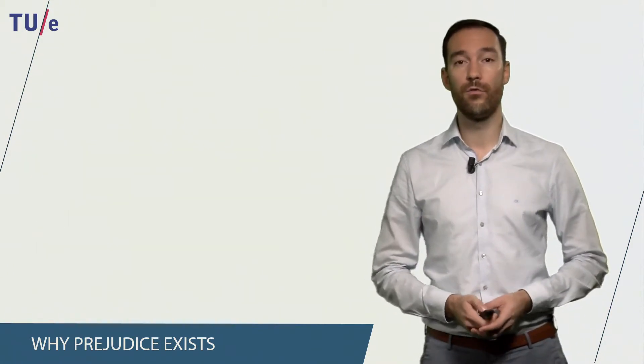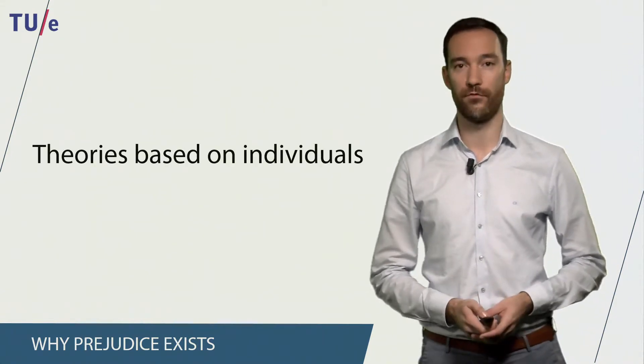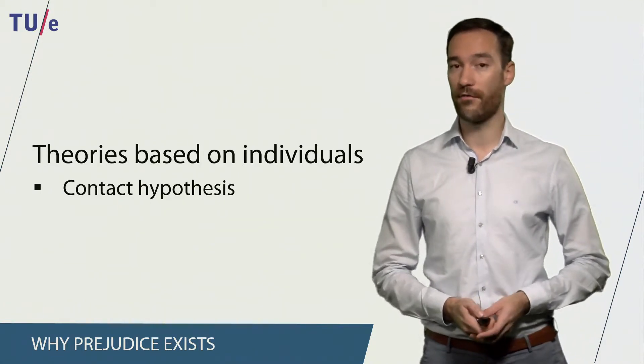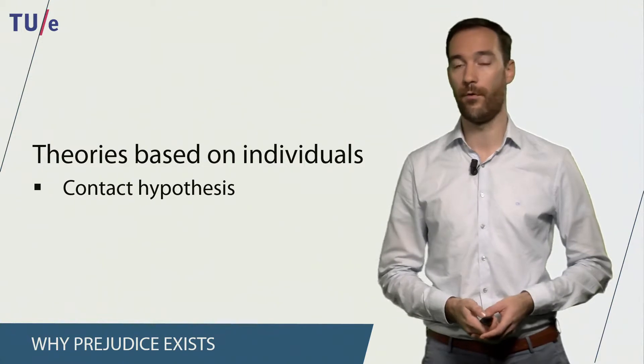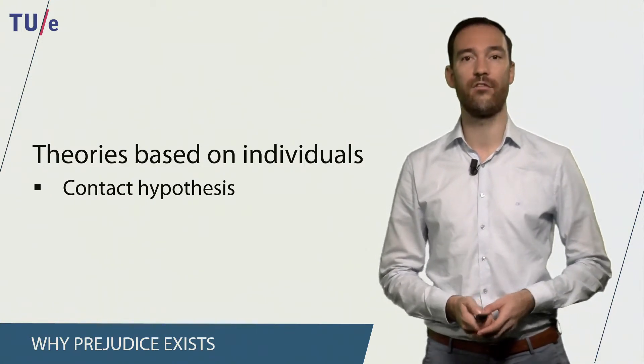In addition to theories that are based on group membership, some theories are also based on individuals. One of these is the contact hypothesis. The contact hypothesis states that if we do not get in touch or in contact with people that belong to different groups, we are more likely to be prejudiced against those groups.